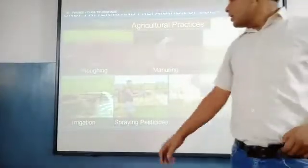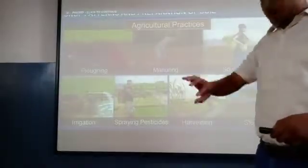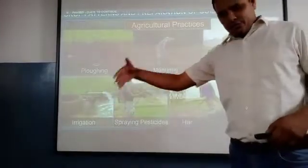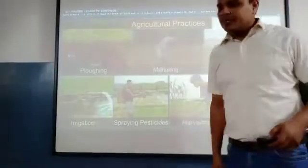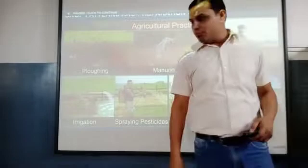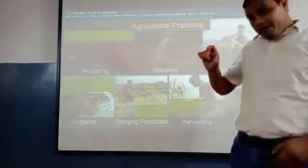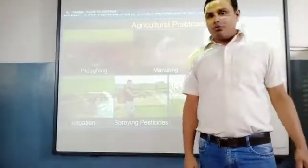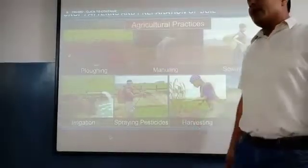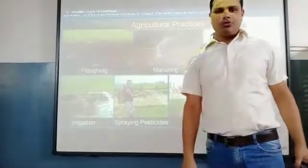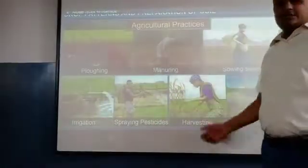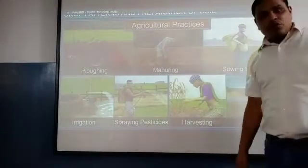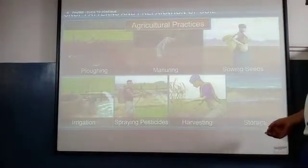After plowing, we have to do manuring — we put manure in the soil. After the sowing of seeds, we do irrigation to provide the field with an adequate amount of water. After that, we spray pesticides because pests attack and destroy crops. When the crop is ready, we harvest it.